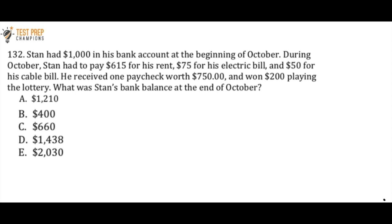If Stan had $1,000 in his bank account at the beginning of October, during October Stan had to pay $615 for his rent, $75 for his electric bill, and $50 for his cable bill. He received one paycheck worth $750 and won $200 playing the lottery. What was Stan's bank balance at the end of October?